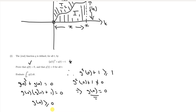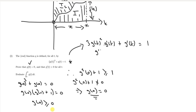Now it's asking us to show that the derivative g'(t) is greater than 0. The best way to approach this is by differentiating implicitly. Looking at the left-hand side first, we get 3g(t) squared times g'(t) plus g'(t) equals 1 on the right-hand side. We can take out a factor of g'(t), giving g'(t) times 3g(t) squared plus 1 equals 1.